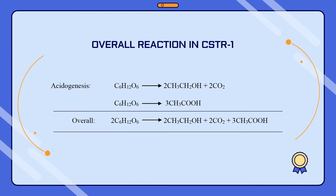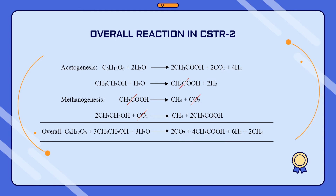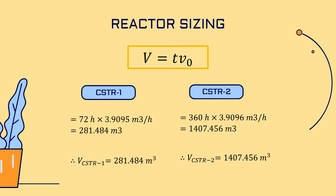The overall reaction in CSTR1 is obtained by combining two acidogenesis reactions, and the overall reaction in CSTR2 is obtained by combining two reactions from acetogenesis and two reactions from methanogenesis. Reactor sizing is determined by using the optimum hydraulic retention time multiplied by the volumetric flow rate in each reactor.